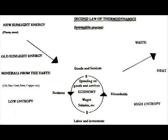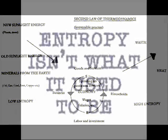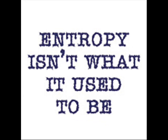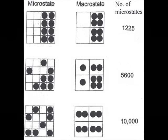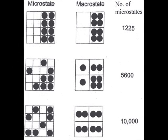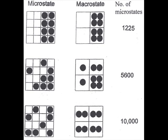The second law of thermodynamics is an expression of the universal law of increasing entropy, stating that the entropy of an isolated system which is not in equilibrium will tend to increase over time, approaching a maximum value at equilibrium. This is partially derived from Newton's law of inertia.